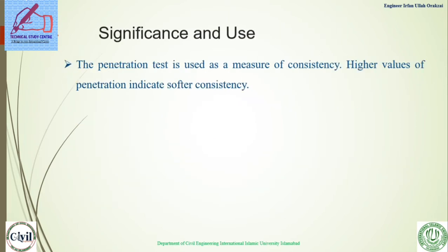Regarding significance and use of the test: the penetration test is used as a measure of consistency. A higher value of penetration indicates a softer consistency. If the bituminous material is softer, the needle will penetrate deeper; if it is very hard, the needle will not penetrate as deep. This test can be used to determine how hard or soft a material should be for specific construction of roads and other buildings.